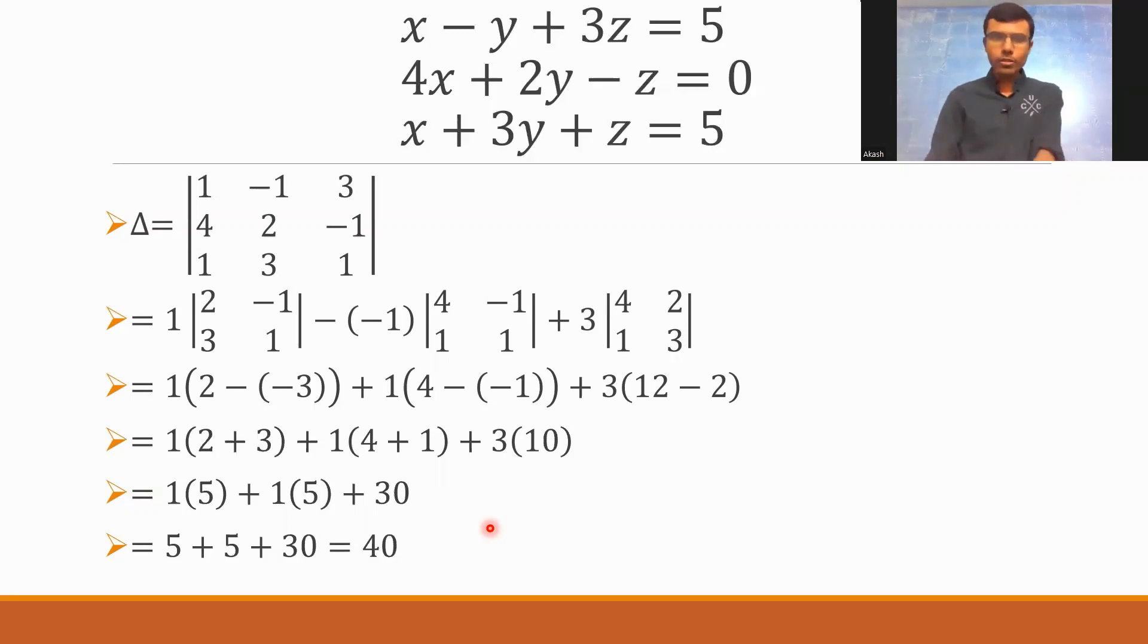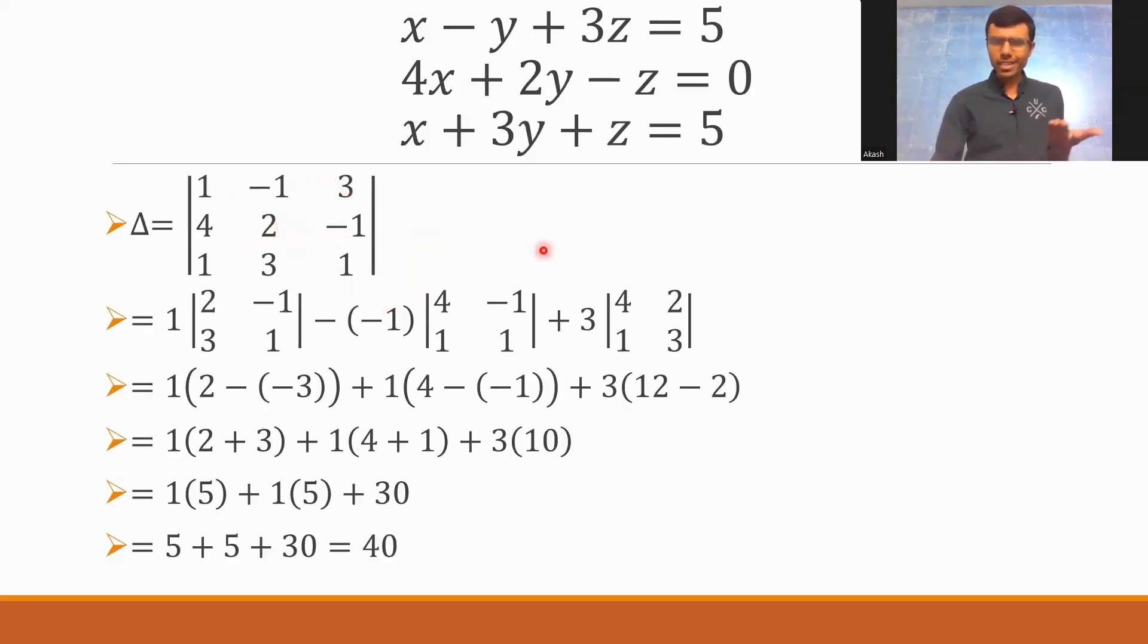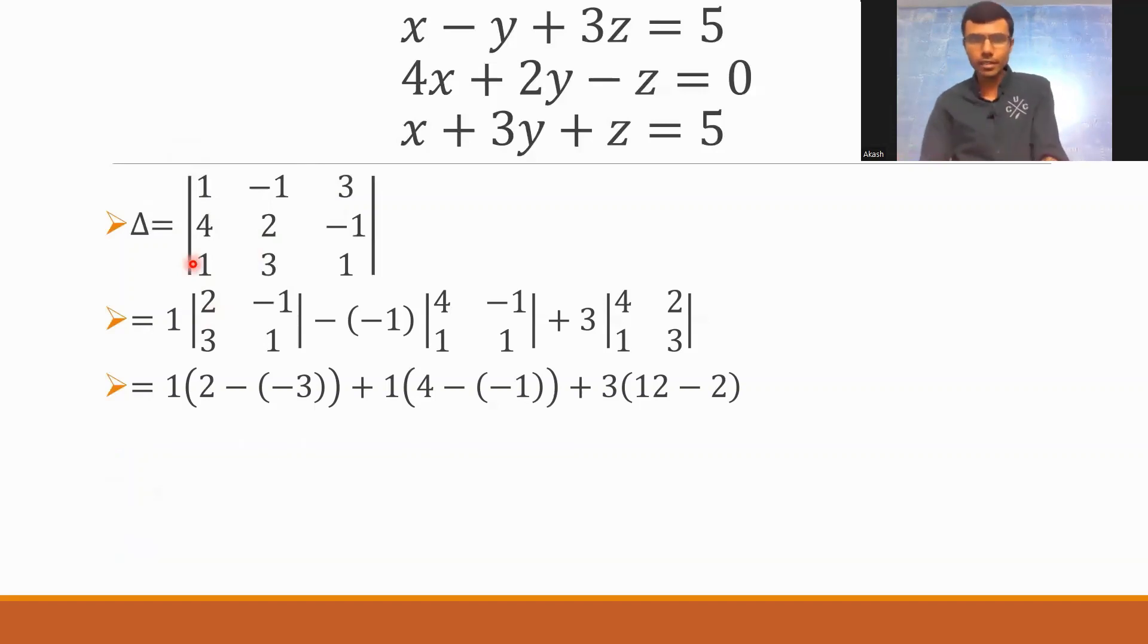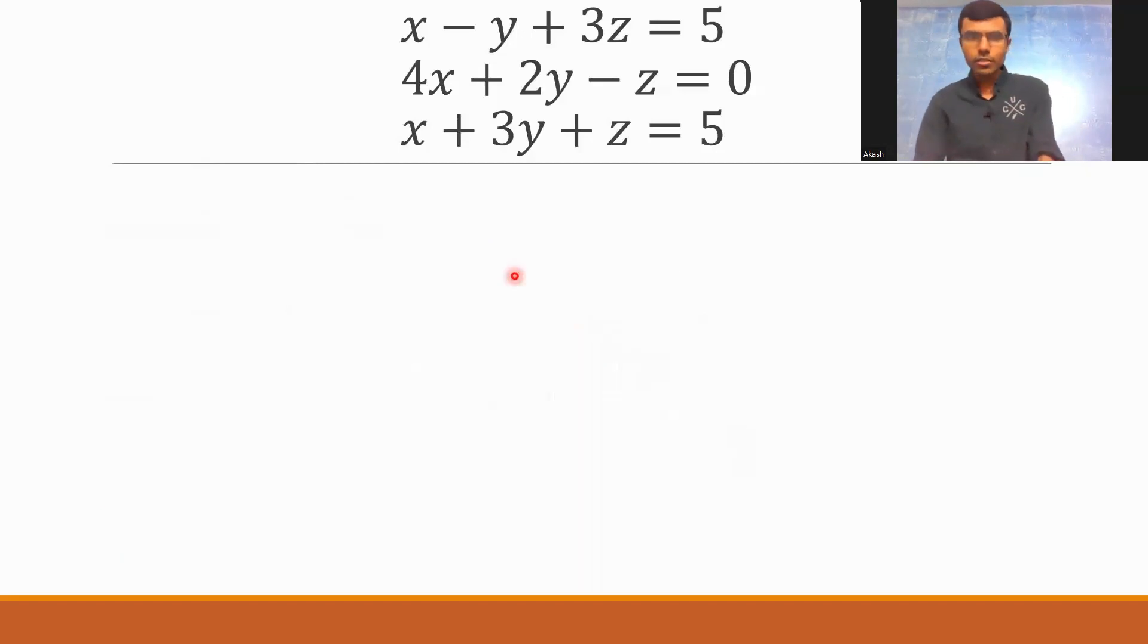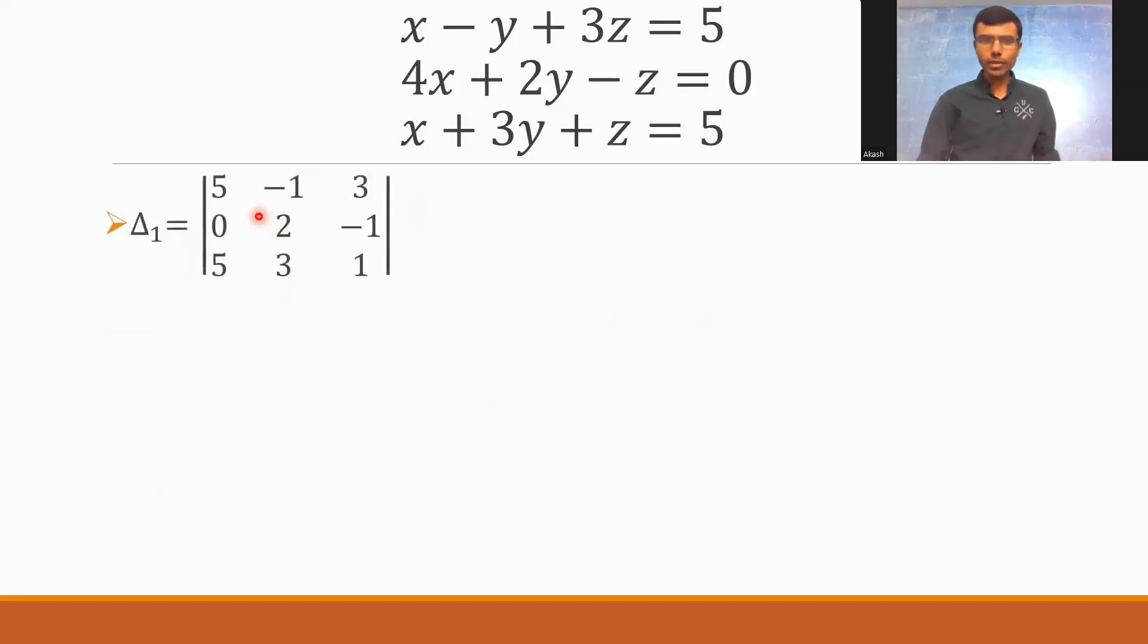Fine. Now, next, my target is to find out delta 1. You see, how did I get this delta 1? It's pretty simple. Okay. You guys understood what is this delta? Fine. Now, in this delta, in this delta, replace the first column, replace the first column of delta with the elements of D. What are our elements of D? If you guys remember, D is nothing but 5, 0, 5. So, in this first column, if you'll replace it with 5, 0, 5, what I'd get is 5, 0, 5, and then minus 1, 3, minus 1, 3, 1. This is delta 1. 5, 0, 5, and the rest of it is same. Fine. Now, let's expand this determinant. 5 into determinant of 2 minus 1, 3, 1, and minus 1, minus of minus 1 into determinant of 0 minus 1, 5, 1, and then plus 3 into determinant of 0, 2, 5, 3. Fine. That should do the task.